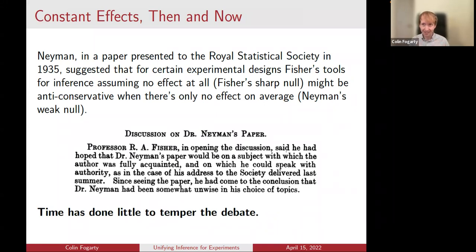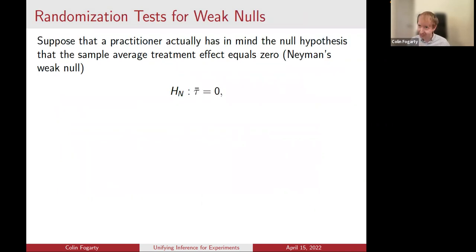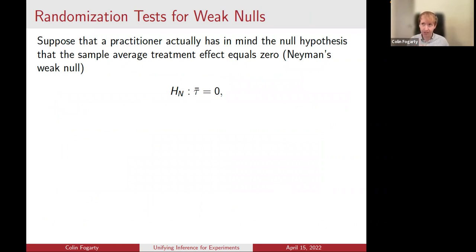This contentious issue continues to be a contentious issue to this day. For a nice summary of arguments for Neyman's null, Andrew Gelman has a really nice blog post. For arguments for Fisher's null hypothesis, any of the textbooks or writings of Paul Rosenbaum would be a wonderful place to start for an articulate defense of that stronger notion. Our main focus will be more on the practical implications — what Neyman was concerned about in that paper he presented.